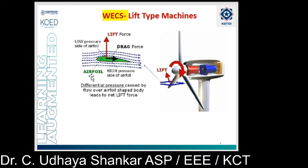Drag devices are less efficient and turn slower than wind speed. They produce high torque and thus are suitable for pumping applications. At high wind speeds they will spill the wind instead of producing more energy, and thus they do not benefit from the high energy density available in the wind. In case of lift blade design, it employs the same principle used in aeroplanes, kites, and birds to fly.